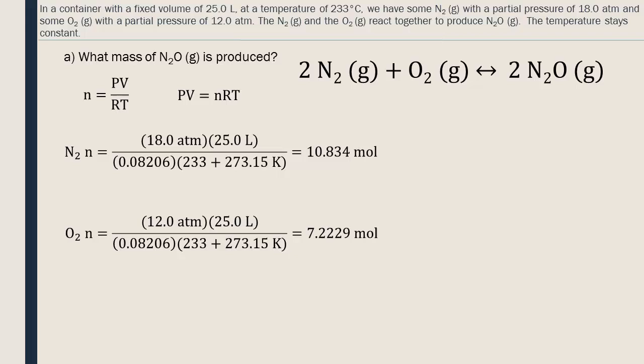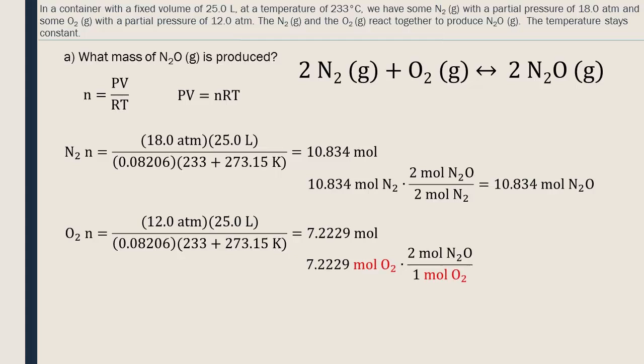Next, we need to multiply the numbers of moles by the stoichiometric coefficients to find how many moles of N2O could be produced. Looking at the balanced equation, we see that 2 moles of N2 produce 2 moles of N2O, so they are stoichiometrically equivalent. 1 mole of O2 produces 2 moles of N2O, so it can produce 2 times more moles than the nitrogen.